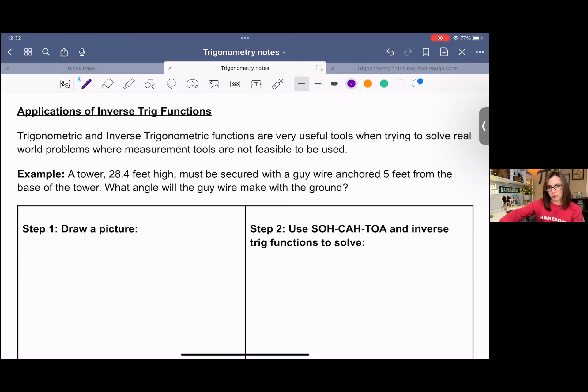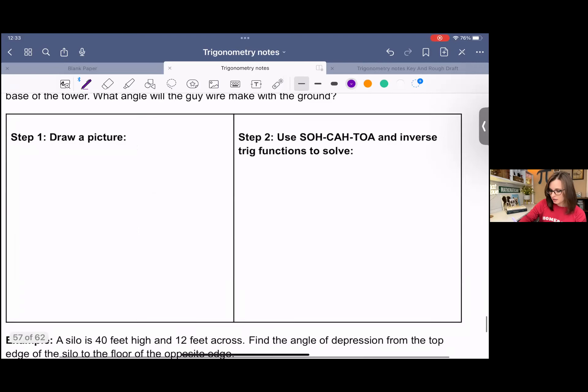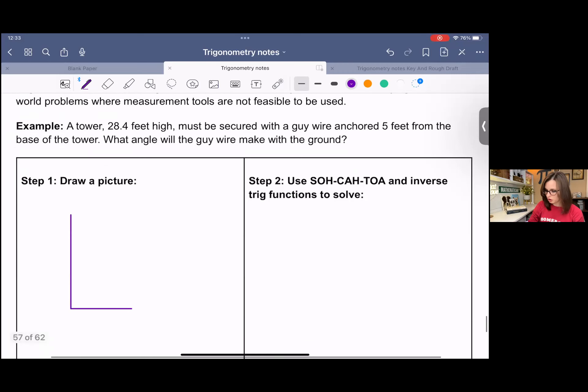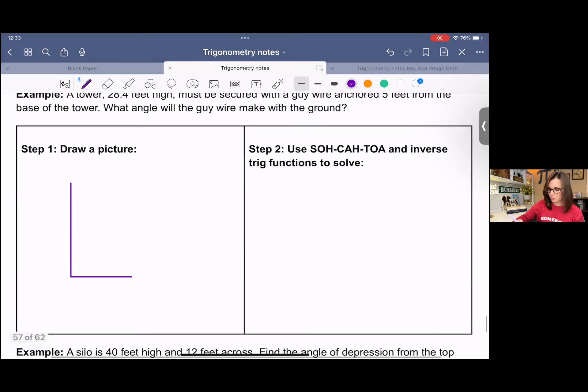So it doesn't have to be a pretty picture. It's going to be a triangle. So you can just draw a triangle if you want to, or if you're an artist, you can make it super pretty. So I have a tower and I have the cable secured or anchored five feet away. And I want to know what angle that wire forms with the ground. So this is my tower, 28.4 feet, and it's five feet from the tower. And I'm looking for this angle.